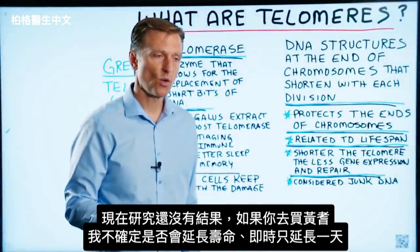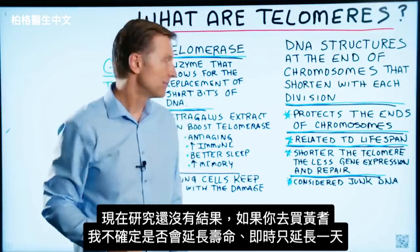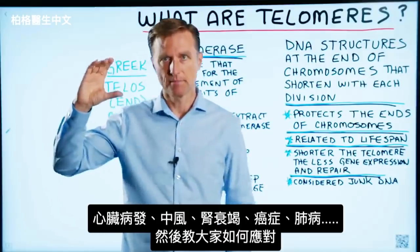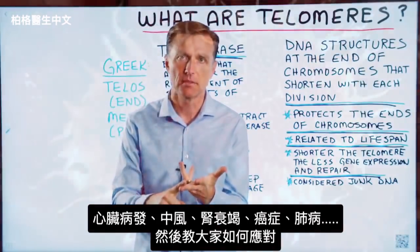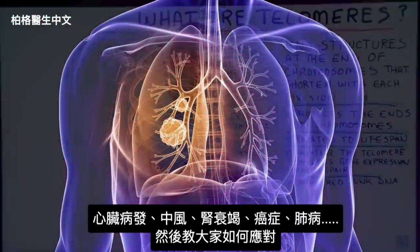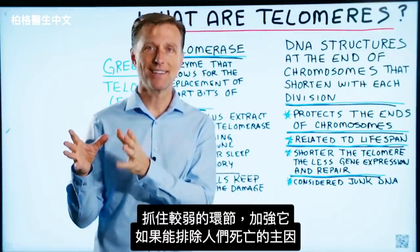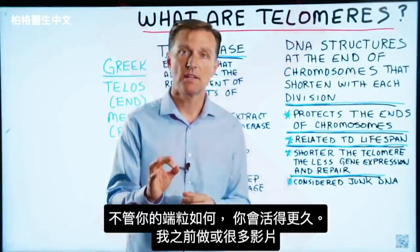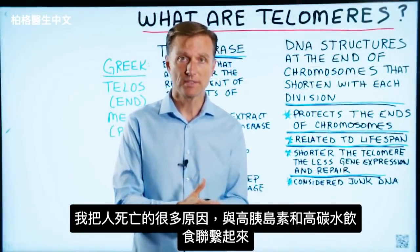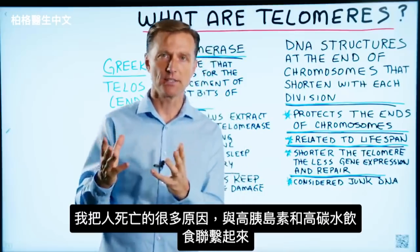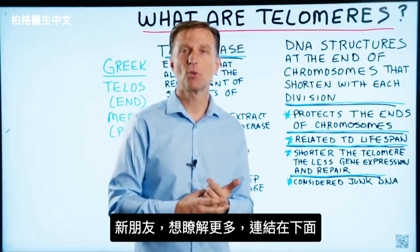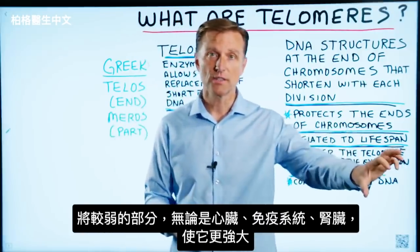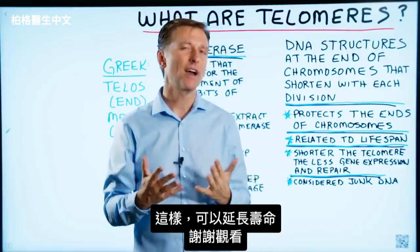The studies right now are inconclusive, so if you go out and get this product, I have no idea if it's going to extend your life even by one day. What I'm interested in is taking the top reasons why people die — heart attacks, stroke, kidney failure, cancer, lung disease — and teaching you what you can do to take your weak link and strengthen it. Because if we can actually eliminate the top reasons why people die, you're going to live longer regardless of your telomeres. A lot of the reasons why people die relate to high insulin and high carbohydrate diets, which is why you need to do healthy keto and intermittent fasting to take that weak link — whether it's your heart, immune system, or kidney — and make it stronger so you can actually extend your life.